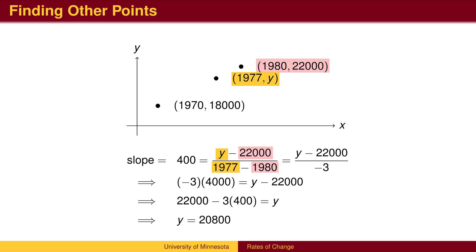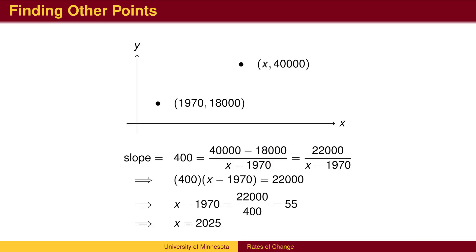We could also compare the 1977 population to the 1980 population to get the same answer. We can also solve for the year. In what year will the population reach 40,000? We need the population to increase by a total of 22,000. At 400 people per year, this will take 55 years, so we will reach 40,000 people in the year 2025.